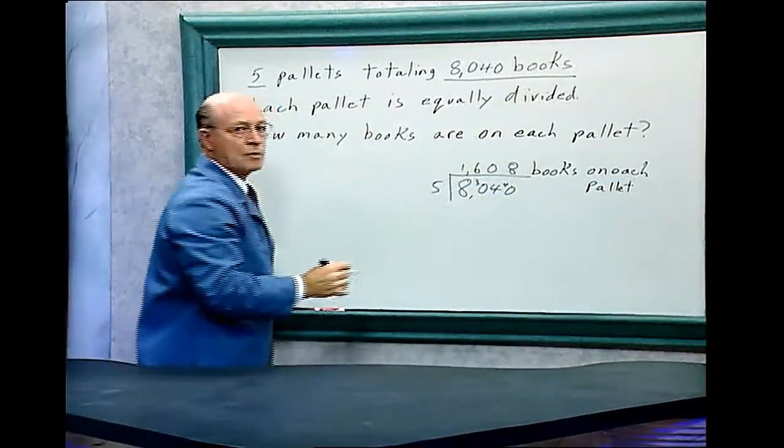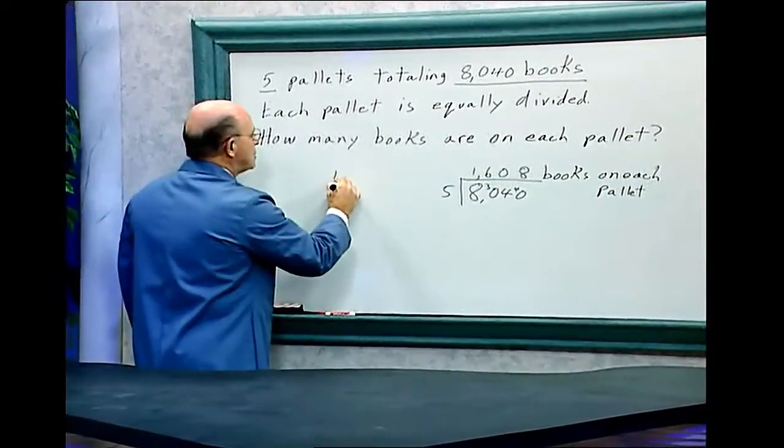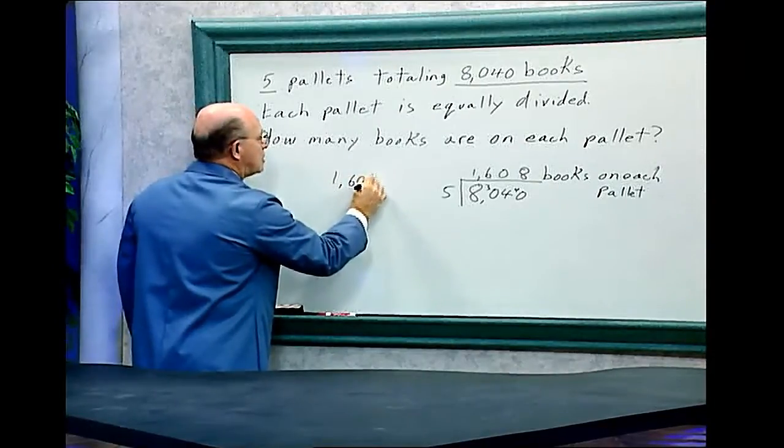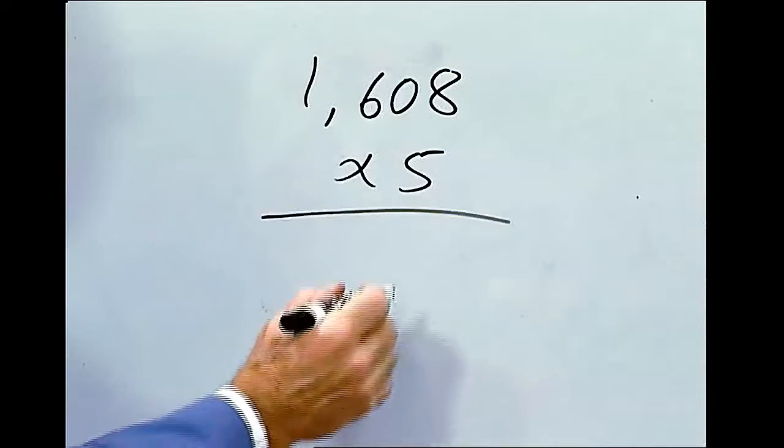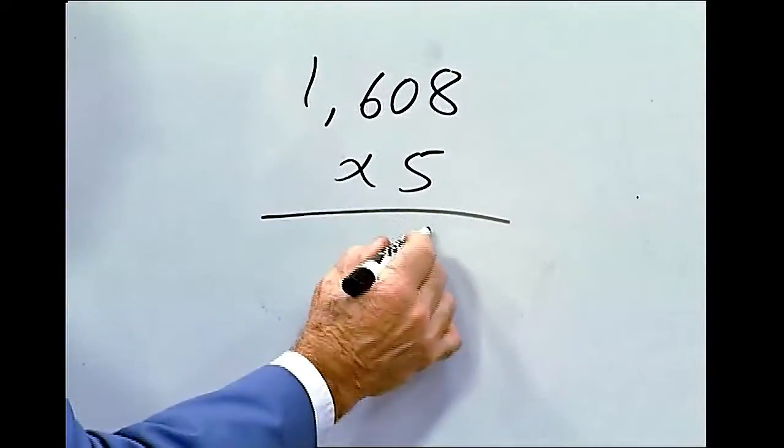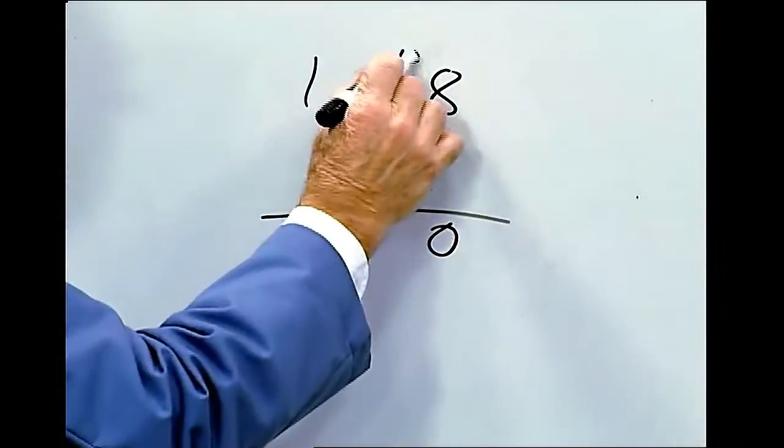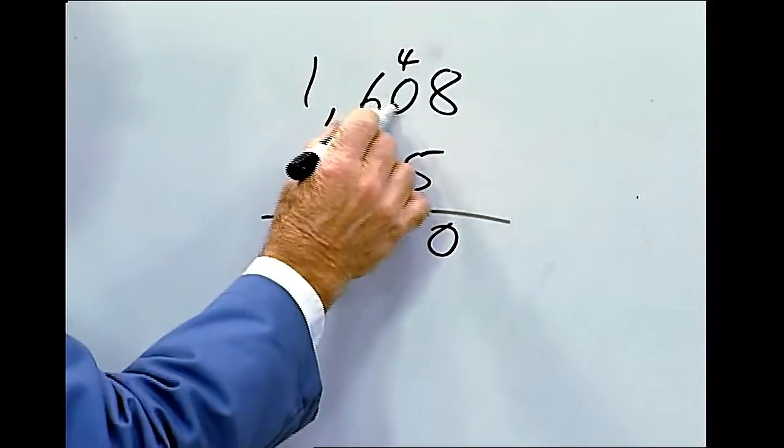Let's check that. 1,608 times 5. 5 times 8 is 40. Carry the 4. 5 times 0 is 0.